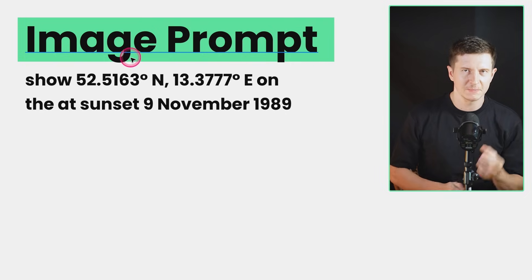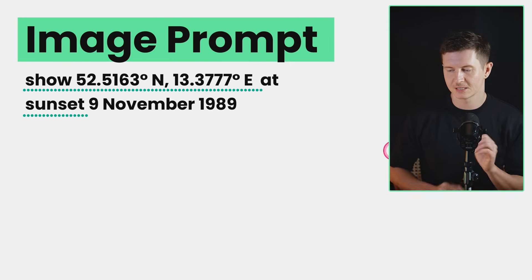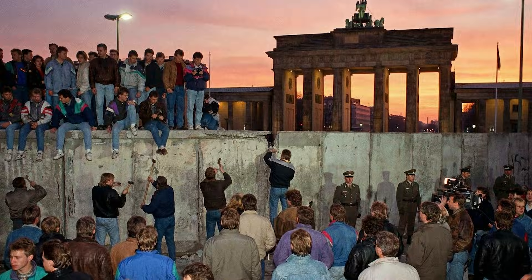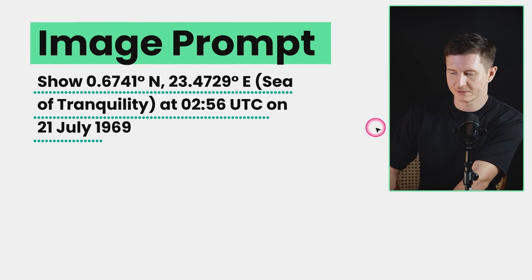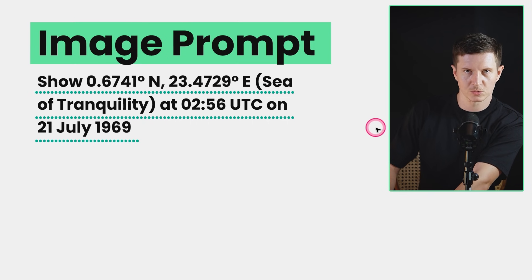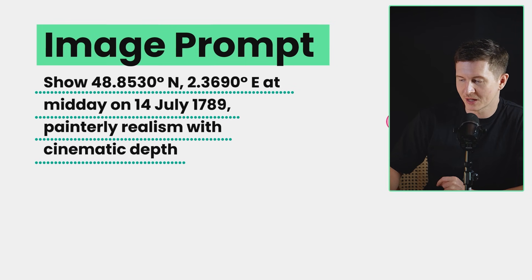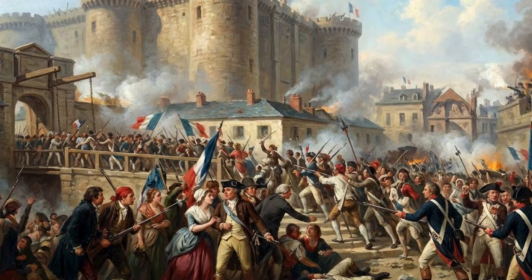To show the power of this, we use the prompt: show these coordinates at sunset on the 9th of November 1989 — and we get out the fall of the Berlin Wall. What's remarkable is we give a specific location and specific time, and it understands what is contextually relevant in its historical database for that moment. We can put in coordinates for the 21st of July 1969 — the moon landing — and for midday on the 14th of July 1789, which was the storming of the Bastille in France. Just with coordinates, a time of day, and a date, we get a very specific scene in history.